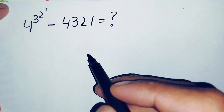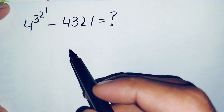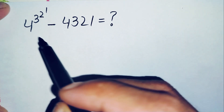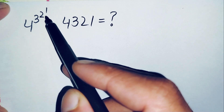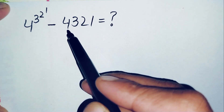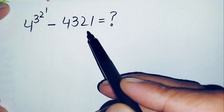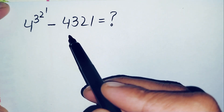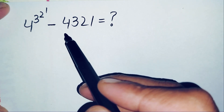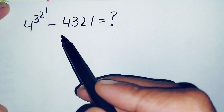Hello everyone, welcome back to Math Explorer. In this video I'm going to solve a beautiful and amazing simplification math problem: that is a power raised to power 3 raised to power 2 raised to power 1, minus 4321. How can we solve this math problem without using a calculator? You have never seen a math problem like this, so let us learn how to solve it.